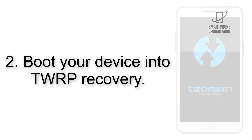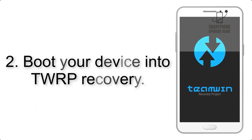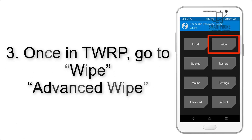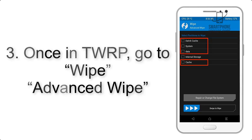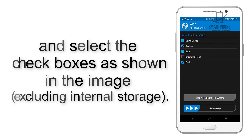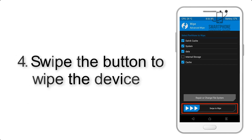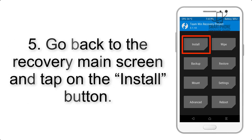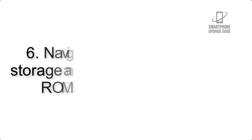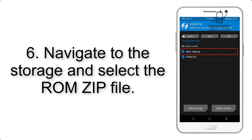Step 2: Boot your device into TWRP recovery. Once in TWRP, click on Wipe, then Advanced Wipe, and select the checkboxes as shown in the image, excluding internal storage. Step 4: Swipe the button to wipe the device. Step 5: Go back to the recovery main screen and tap on the Install button.